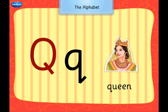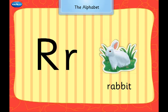Q says Q, Q, Queen. R says R, R, Rabbit.